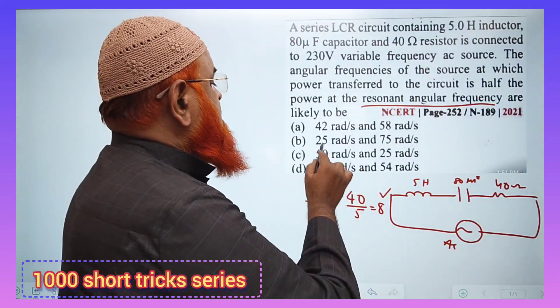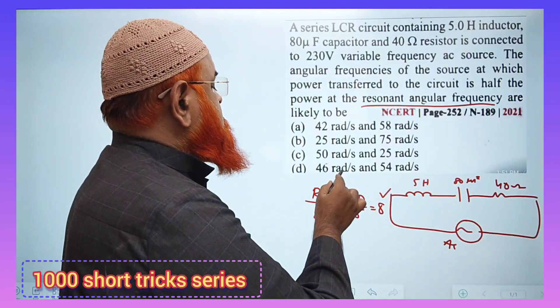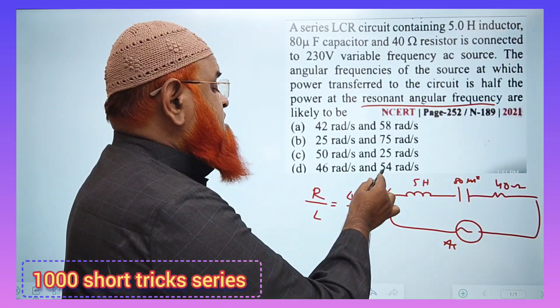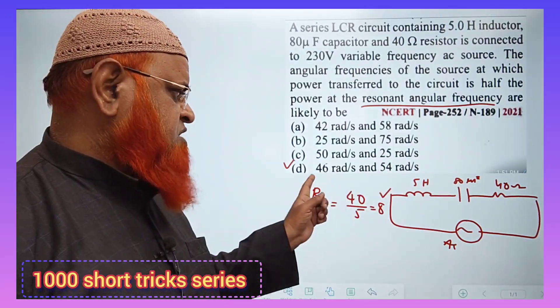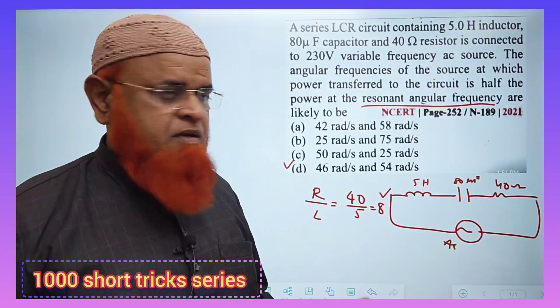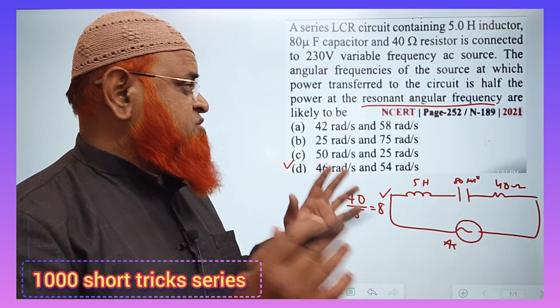So you can just see, I think 46 and 54, D option isn't it? 54 minus 46 is 8, isn't it? So I think the option is going to be the correct answer.